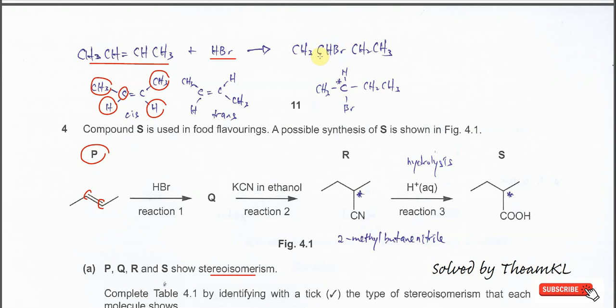This haloalkane — compound Q — will no longer show cis-trans isomerism, but it will show optical isomerism, because the haloalkane has one chiral carbon. This carbon has four different groups attached to it, making it a chiral carbon, so compound Q shows optical isomerism.